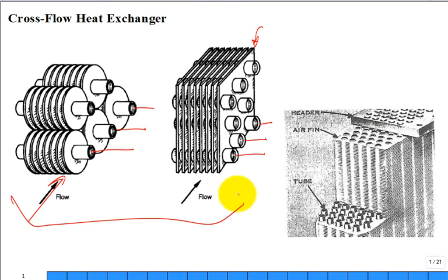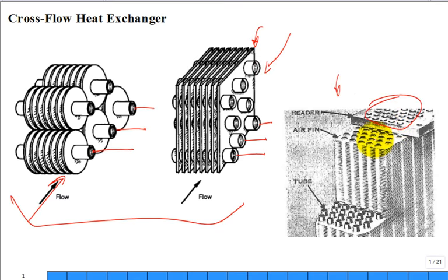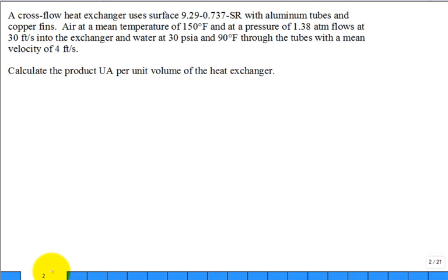We're going to analyze a cross flow heat exchanger to solve a problem, and then look at some compact heat exchangers, which are also cross flow but have a different geometry. This compact type shows the header feeding into tubes with plates between them.